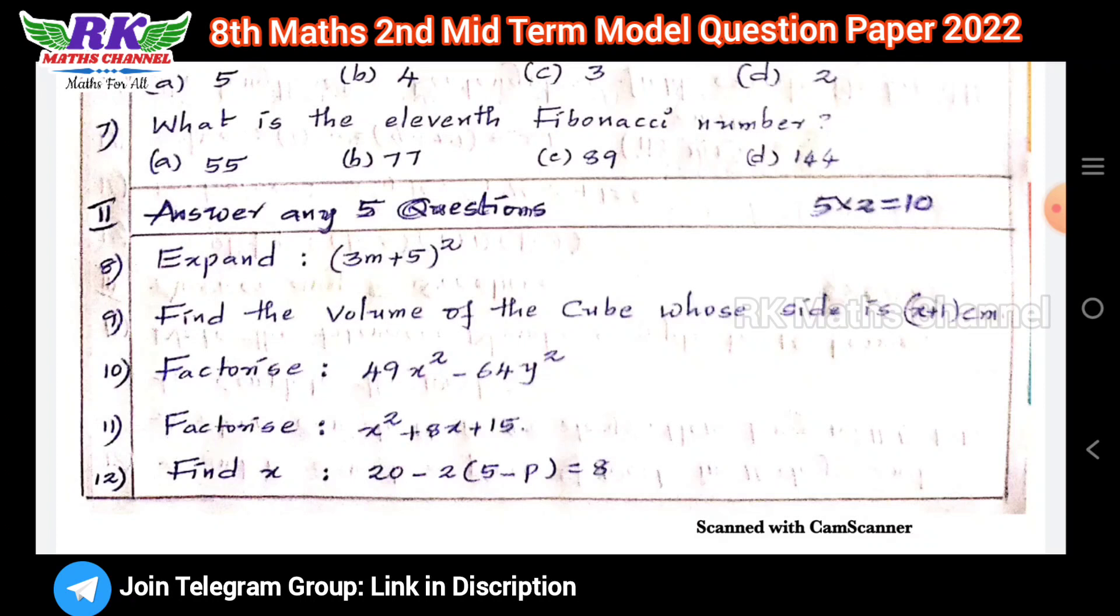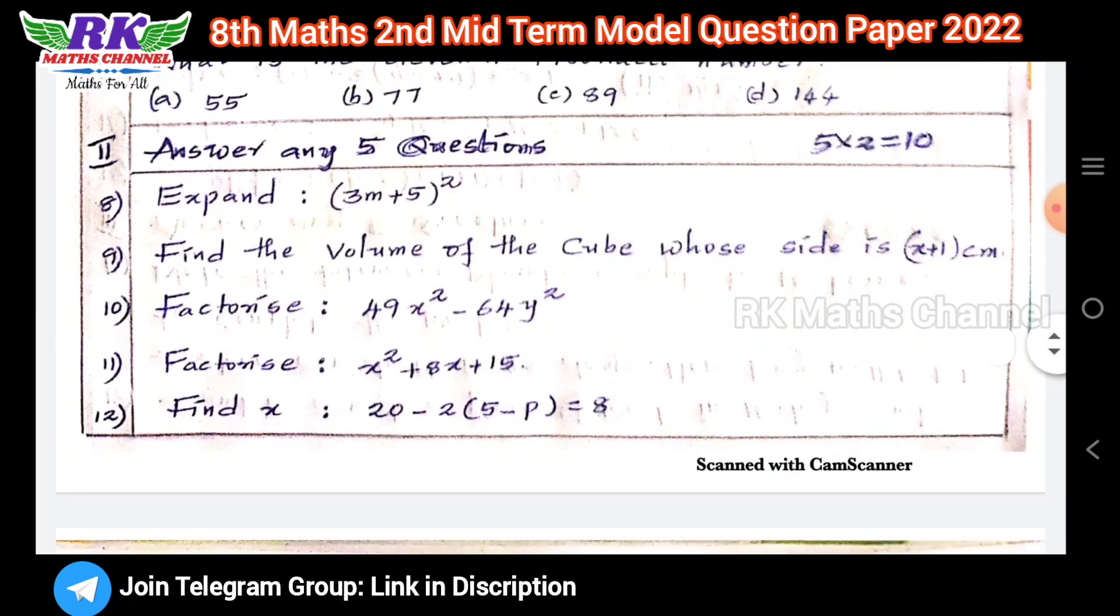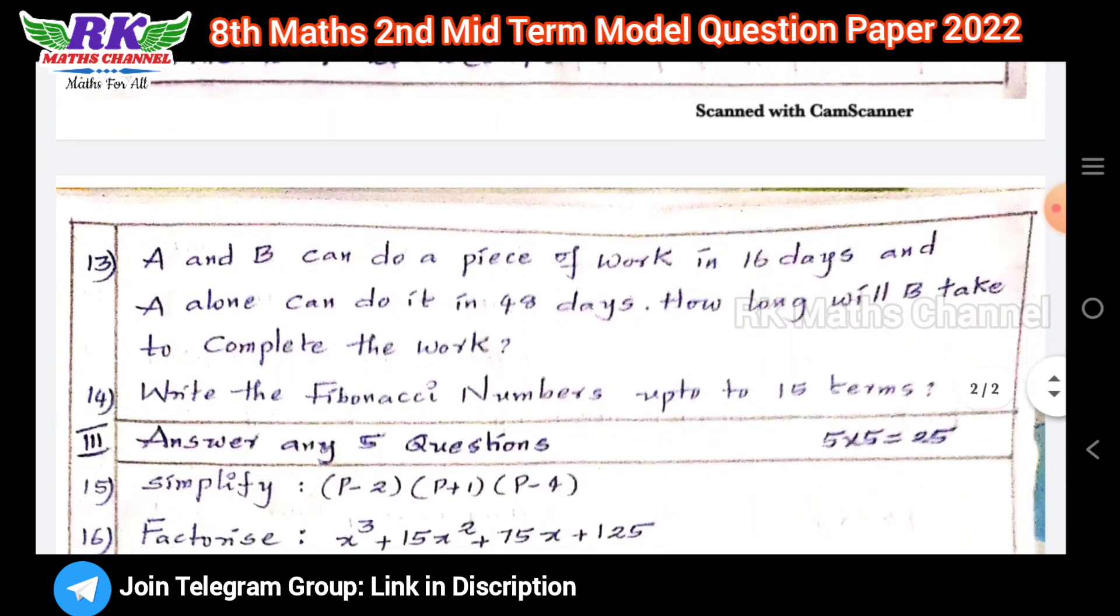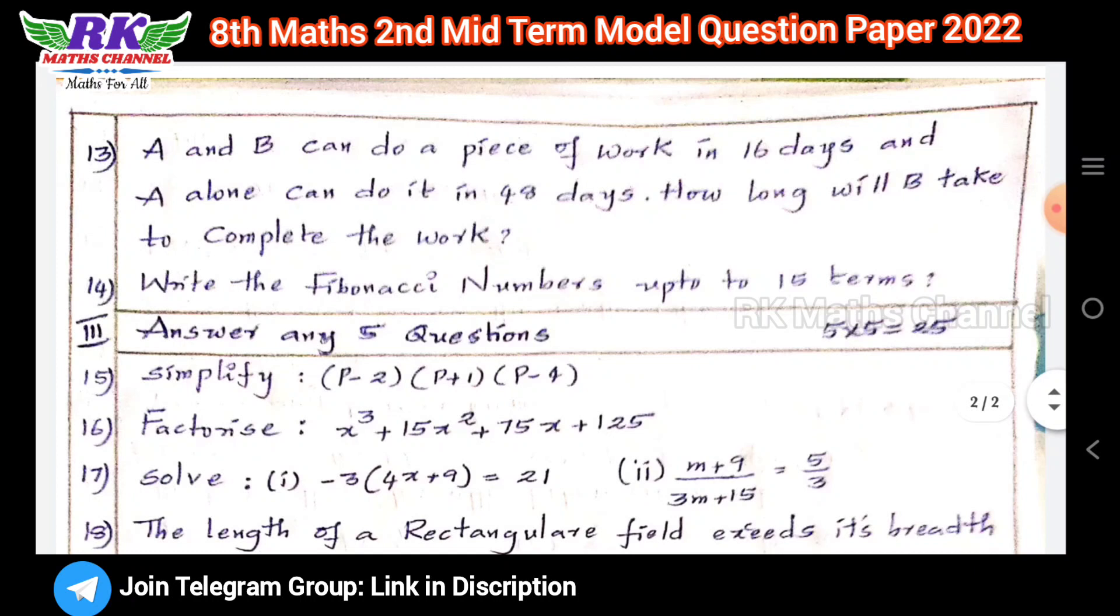Question number 12: find x value using linear equation. Question number 13: A and B can do a piece of work in 16 days and A alone can do it in 48 days, how long will B take to complete the work? Question number 14 is from seventh chapter information processing, about Fibonacci numbers.